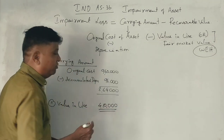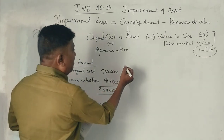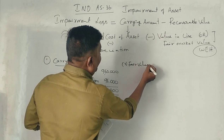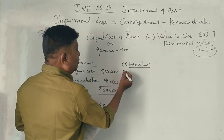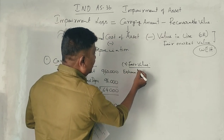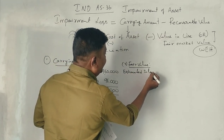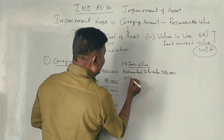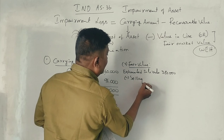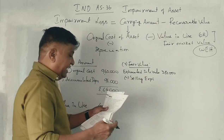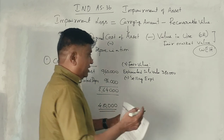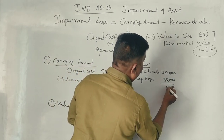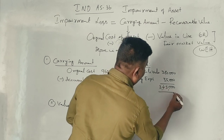Next, calculate the fair value. Estimated sales value minus selling expenses: ₹3,80,000 minus ₹35,000 gives a fair value of ₹3,45,000.